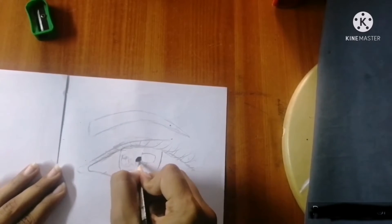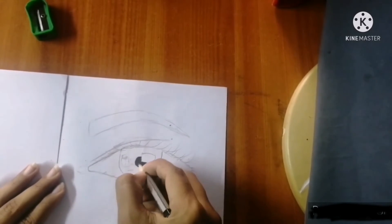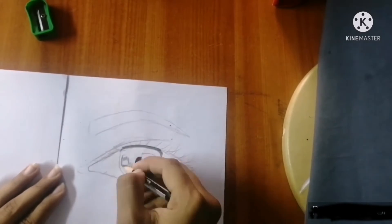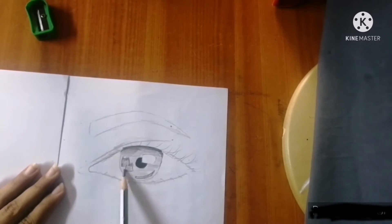The eyeball will be dark. We will darken the eyeball first. Our eye drawing uses light to dark shading. Light to dark shading will give a good texture.